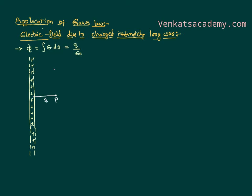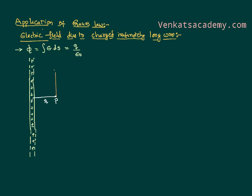What kind of a Gaussian surface? It has to cover that point. Let us imagine a cylindrical Gaussian surface, whose shape covers both sides and encloses point P. As we have a closed Gaussian surface, we can now safely apply the Gauss law and study it.